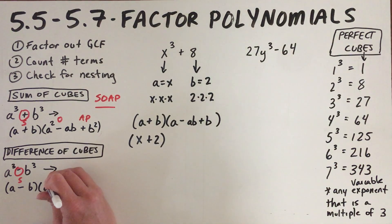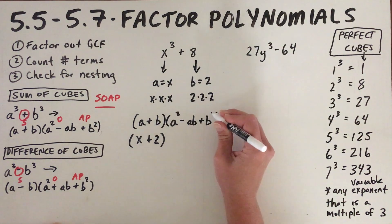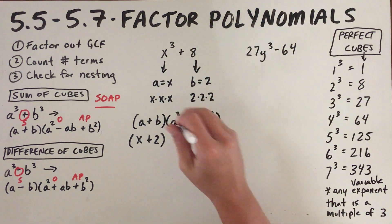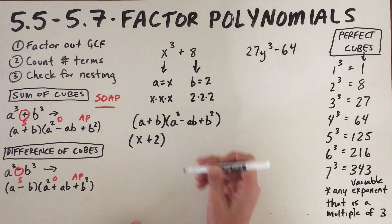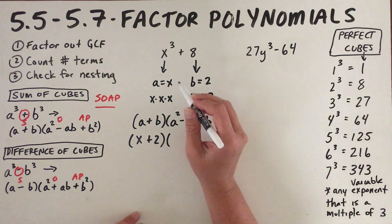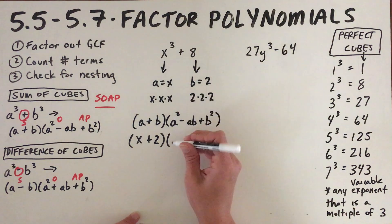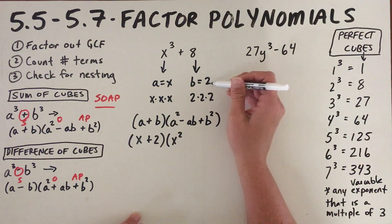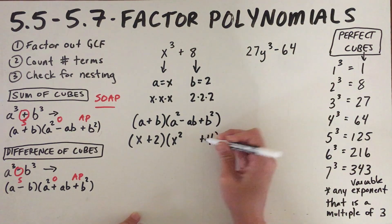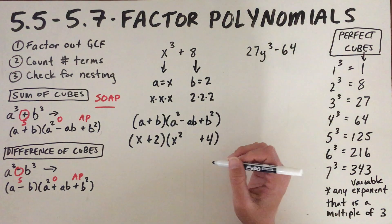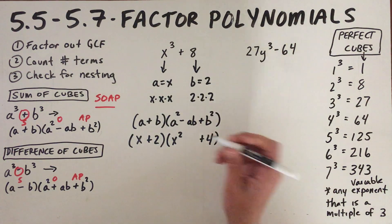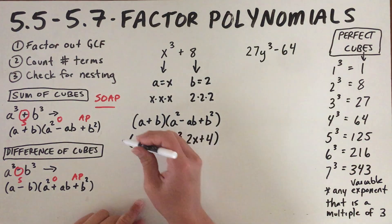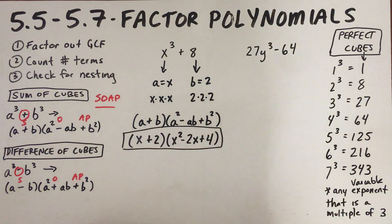Don't forget the squares on the second parenthesis. a squared is x squared, b squared is 4 (since 2 times 2 is 4), and a·b is 2 times x which is 2x, so that term is minus 2x. So this sum of cubes x³ + 8 is now factored completely as (x + 2)(x² − 2x + 4).